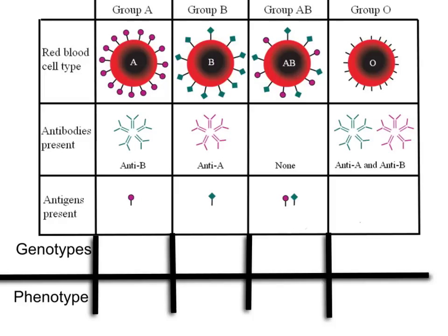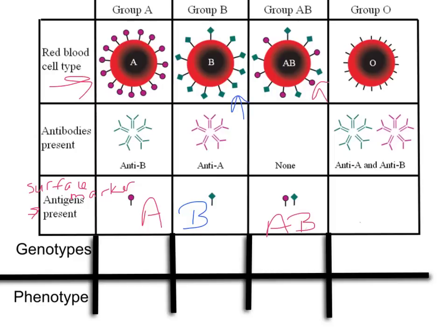Let's look at how this happens. Red blood cells produce what are called antigens — surface markers on the outside of the cell. Type A blood cells have A antigens or A surface markers. People that have type B blood have B surface markers. People that have type AB blood have both, because they're codominant — they have both kinds of surface markers. People that have type O blood do not have either kind of surface marker.